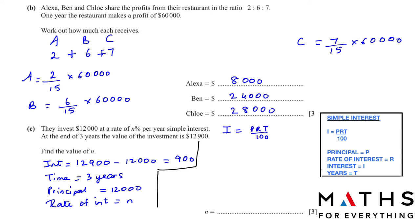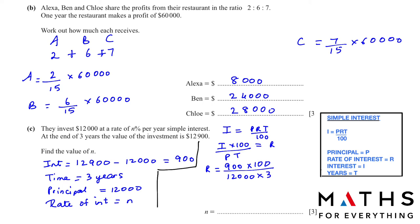We make R the subject: multiply I by 100 and divide by P and T. So R = (I × 100) / (P × T). Our interest is 900, multiplied by 100, divided by principal 12,000 multiplied by time 3 years. This gives us 2.5, so n = 2.5.